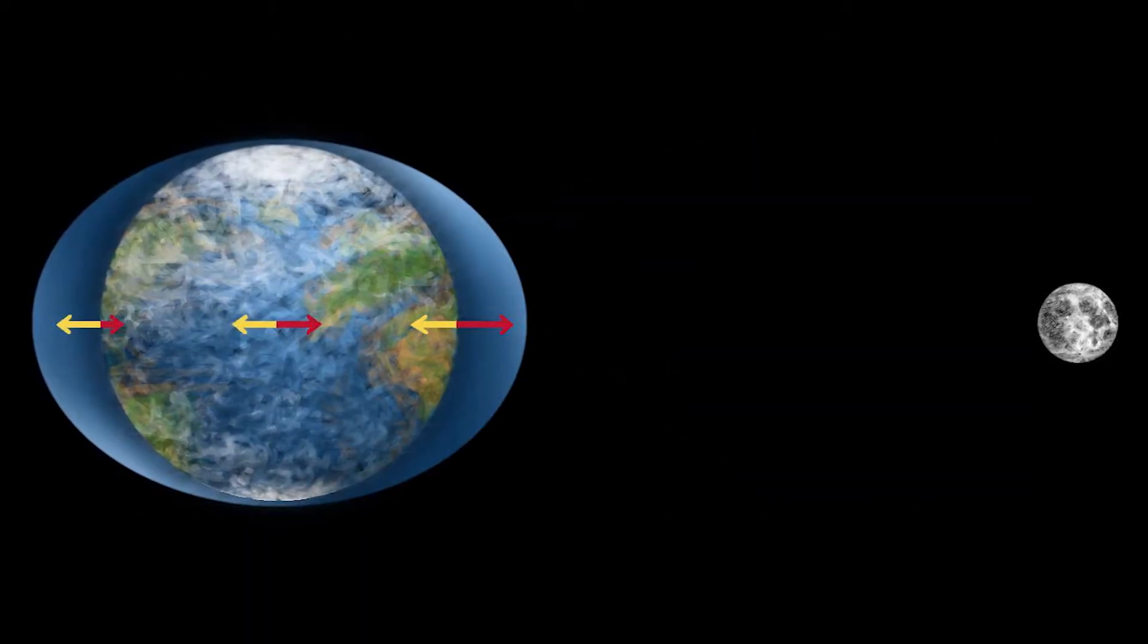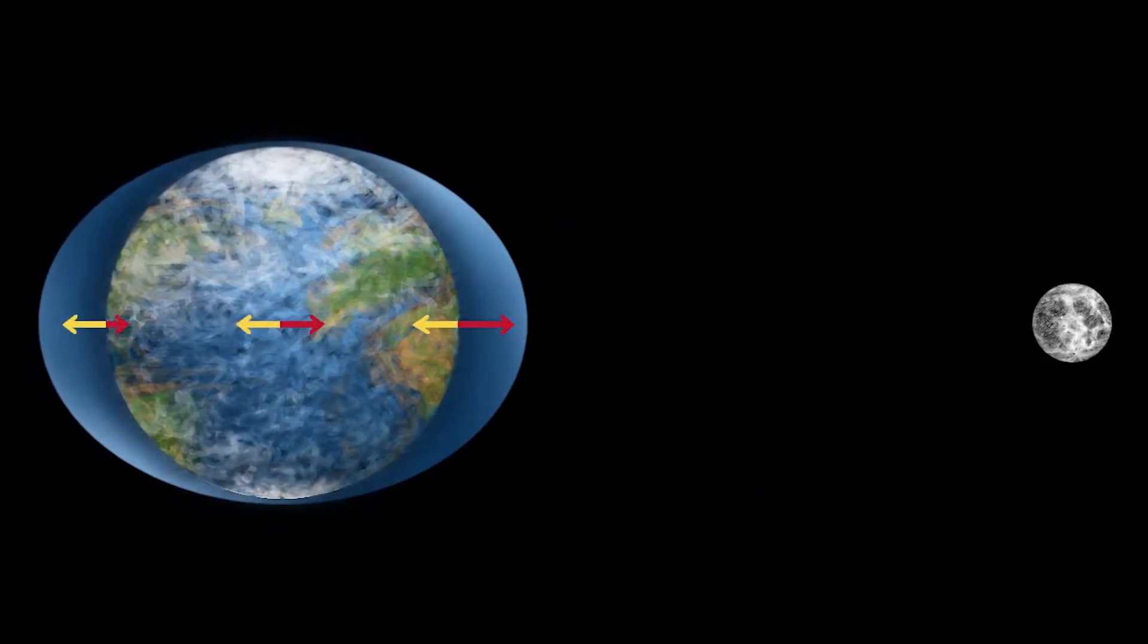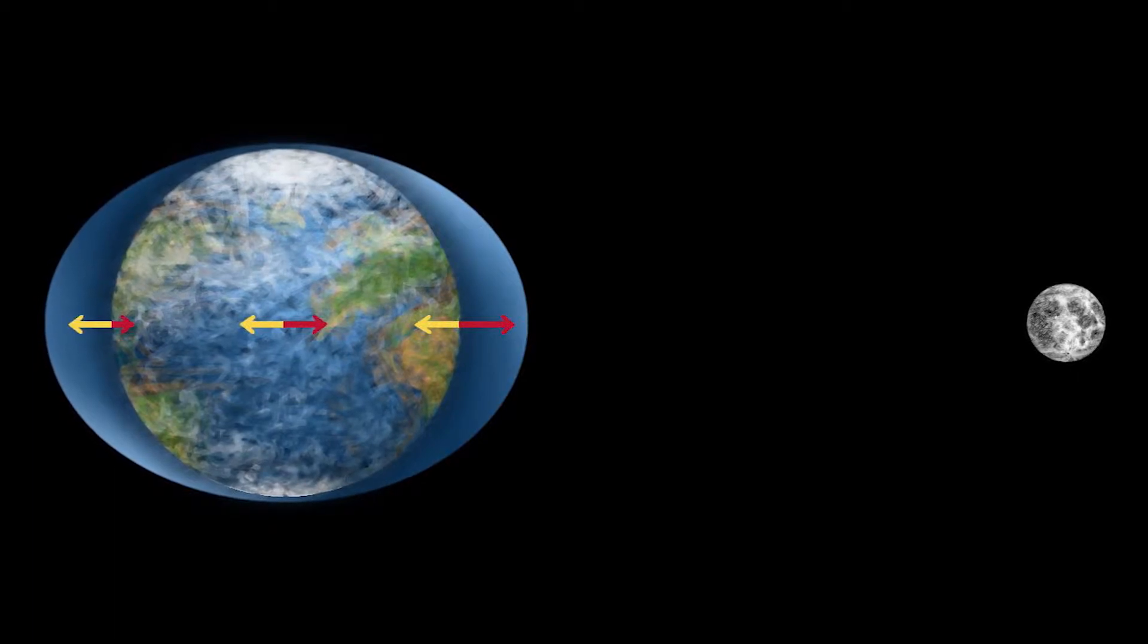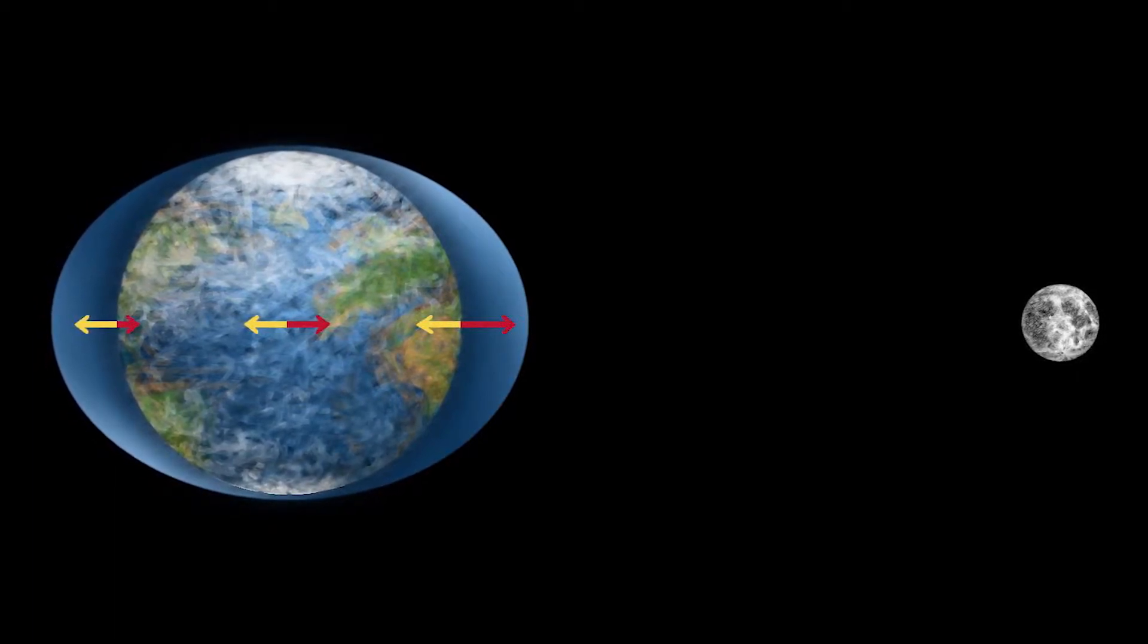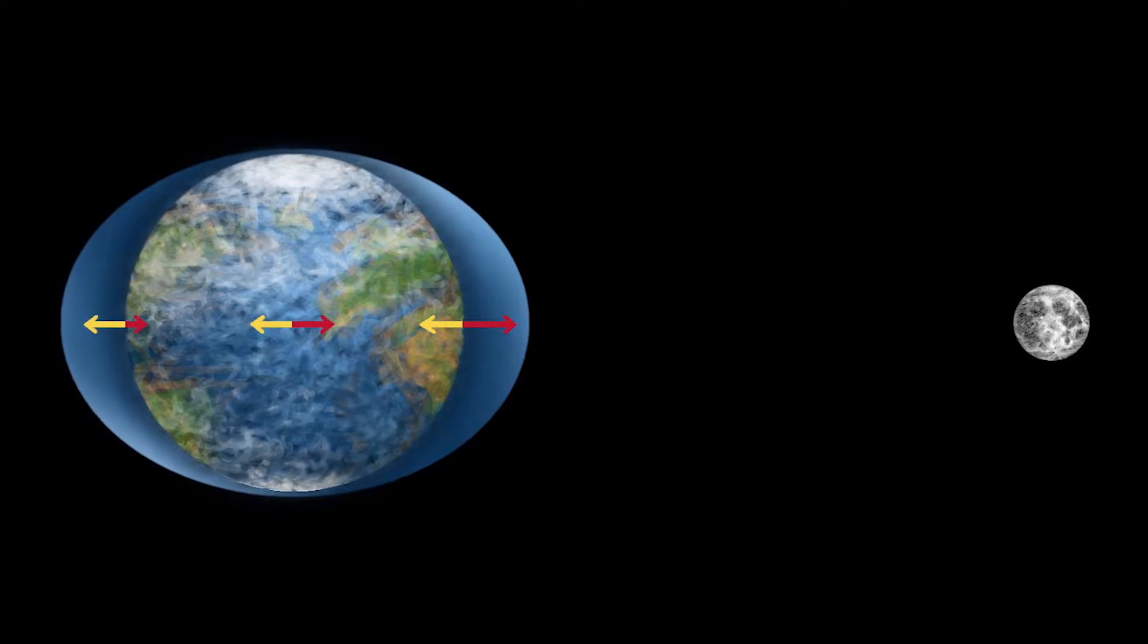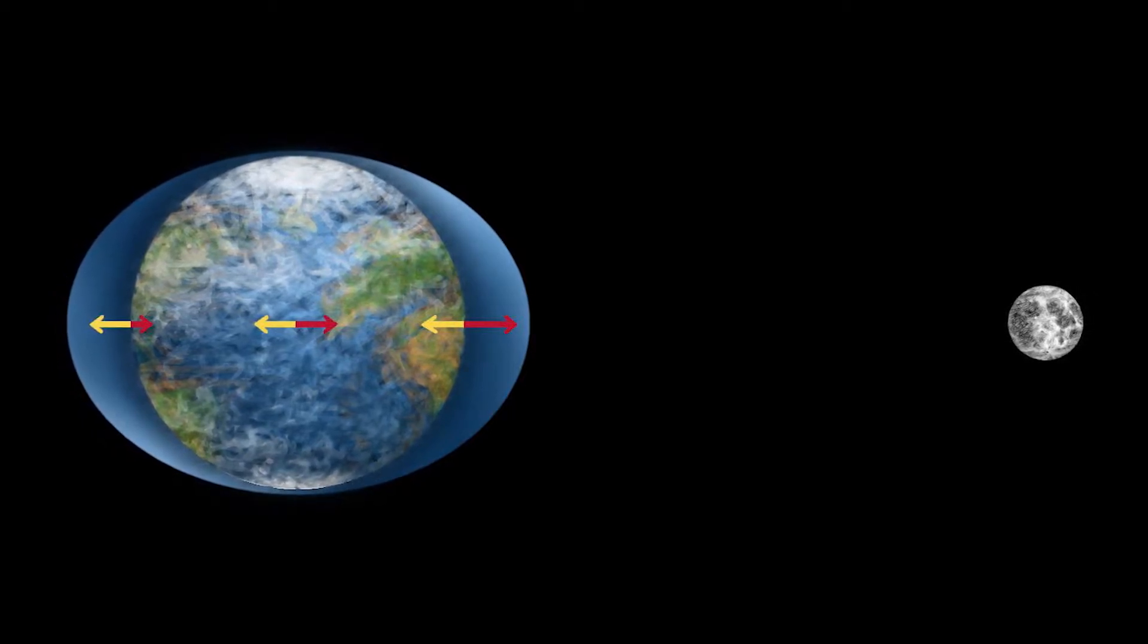It's also possible that these planets kept their moons when they were ejected and could cause tidal heating between the planet and the moon. Tidal heating occurs when a moon orbits a planet and creates a tidal bulge, stretching and heating up the planet.